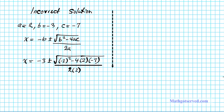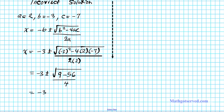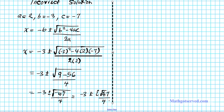Let's go ahead and simplify the radicand. We'll have x equals negative 3 plus or minus the square root of 3 squared, which is 9, minus 4 times 2 is 8, and 8 times 7 is 56, over 4. This becomes negative 3 plus or minus the square root of negative 47 over 4, and then negative 3 plus or minus i root 47 divided by 4. This is my incorrect solution.